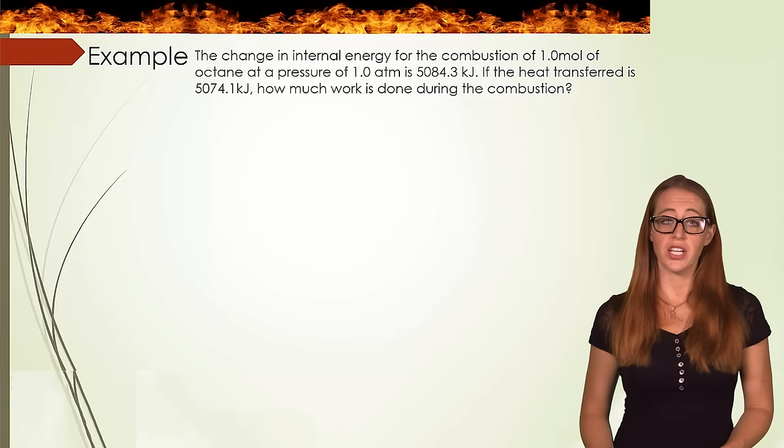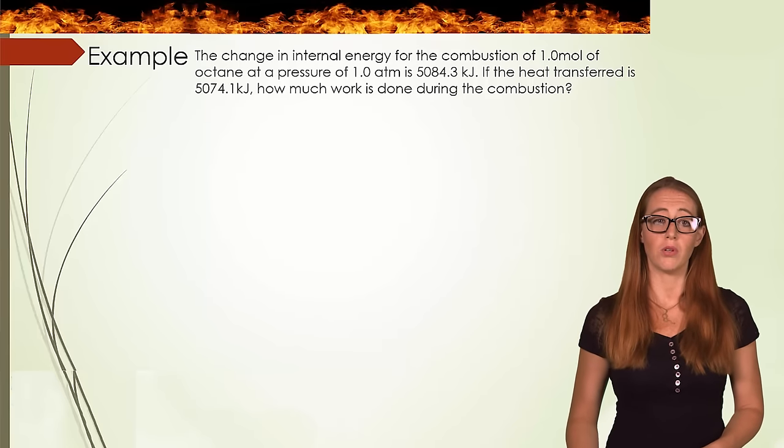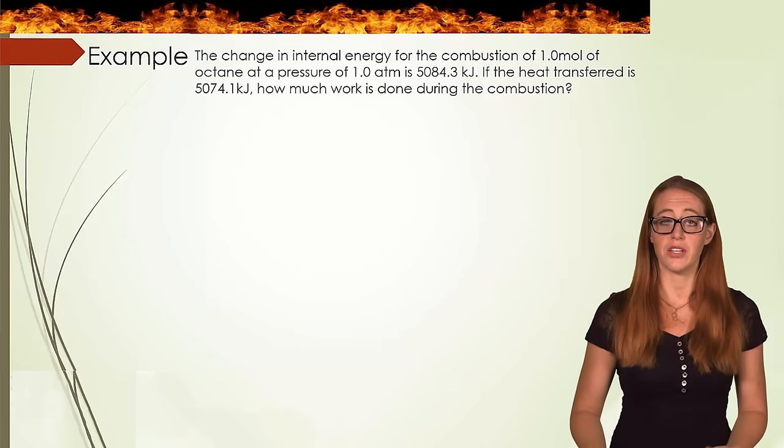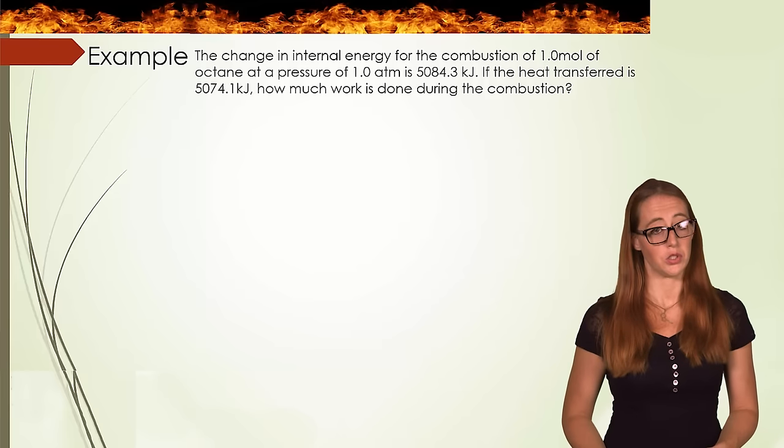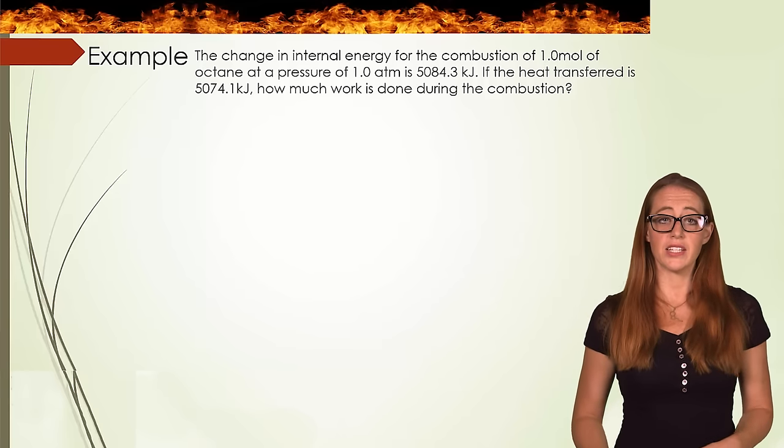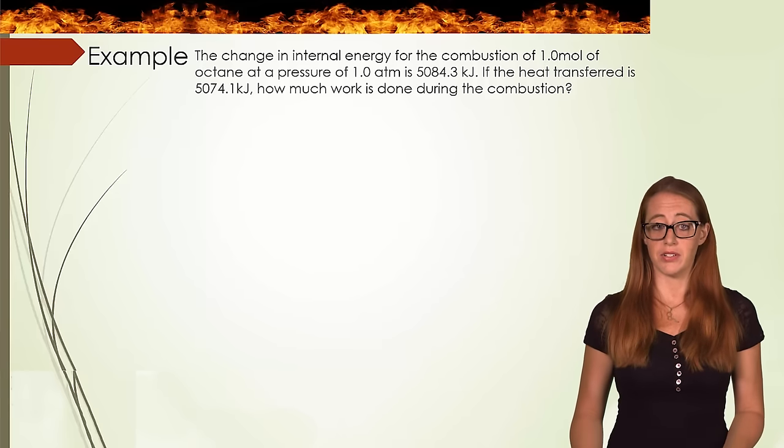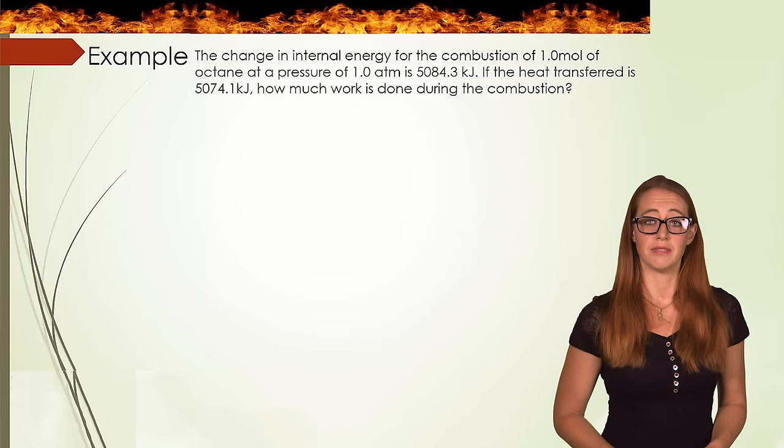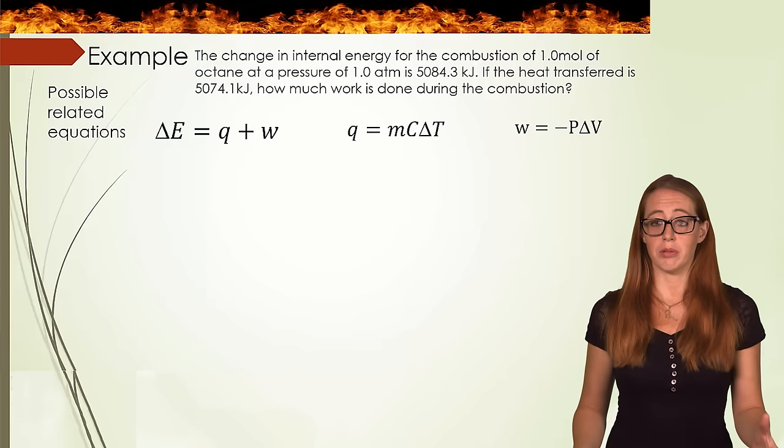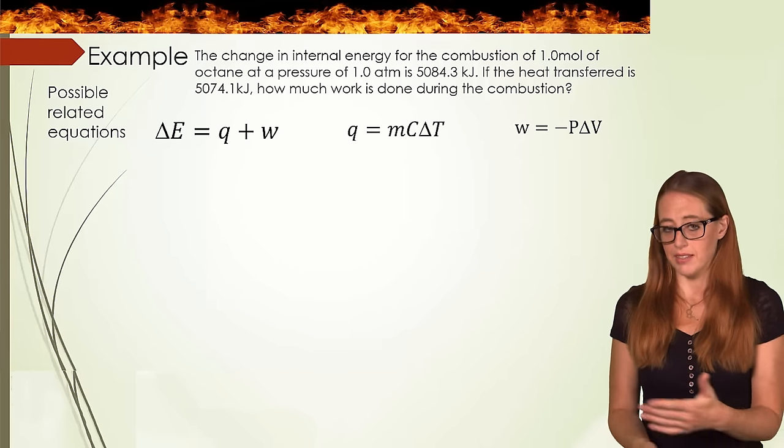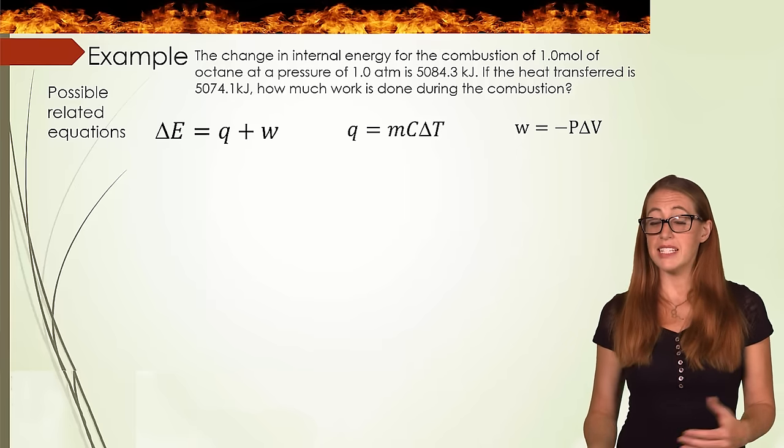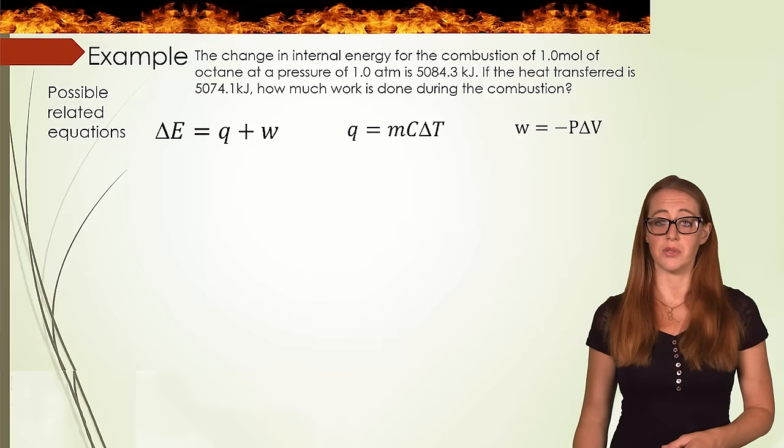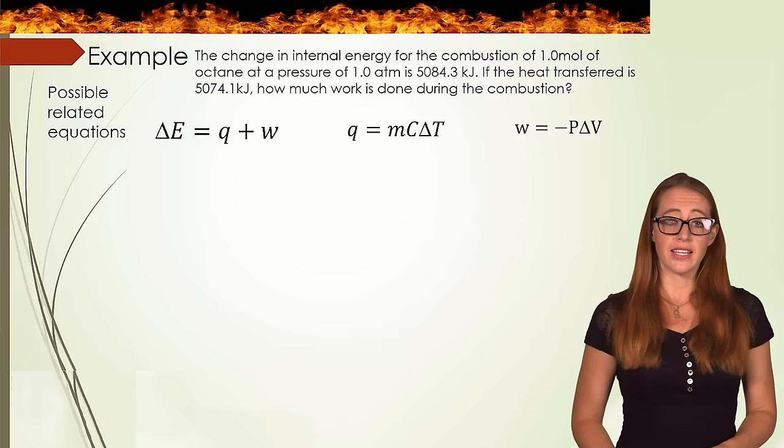We can put all of these together in an example now. We have the change in internal energy for the combustion of one mole of octane at a pressure of one atmosphere, and I tell you the value, 5084.3 kJ. If the heat transferred is 574.1 kJ, so that's specific to the heat, how much work is done? So let's list out all of our possible equations that we would need for this problem. I'm not saying that we are going to use them all, but it's good to have all of these in our mind as things we can use.